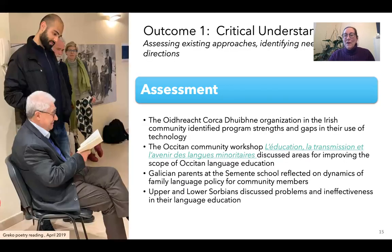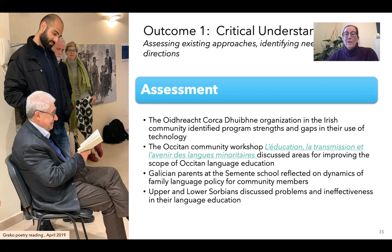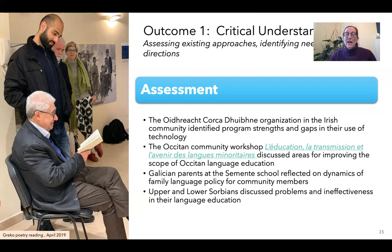Here are some of our findings. The first area, critical understanding, involves people using the research for actual assessment. The education organization in Ireland used the program's questions to identify program strengths and gaps. The Occitan community held a workshop where they took some of the questions to discuss areas for improving the scope of Occitan language education. Galician parents in the Semente school — a language nest growing into a primary school in Galician — used it to reflect on the dynamics of family language policy in their own community. And the Upper and Lower Sorbians discussed problems and ineffectiveness of their own language education programs as well.